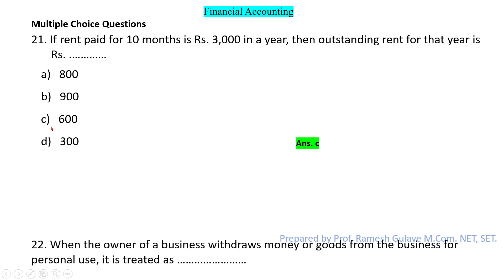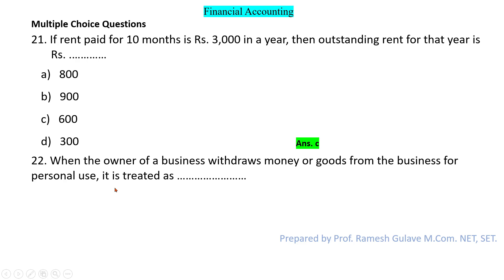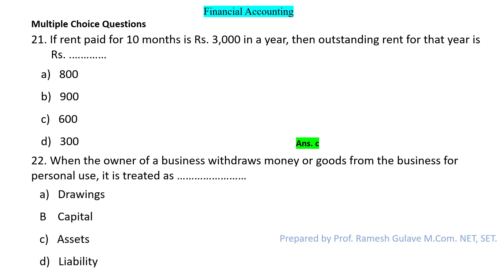When an owner withdraws money or goods for personal use, we treat it as drawings in accounting. So option A is the right answer.